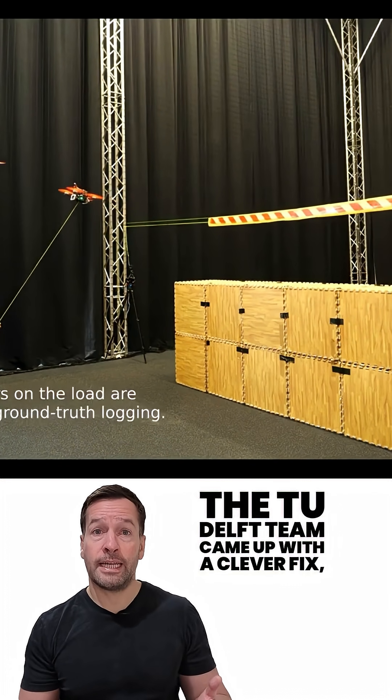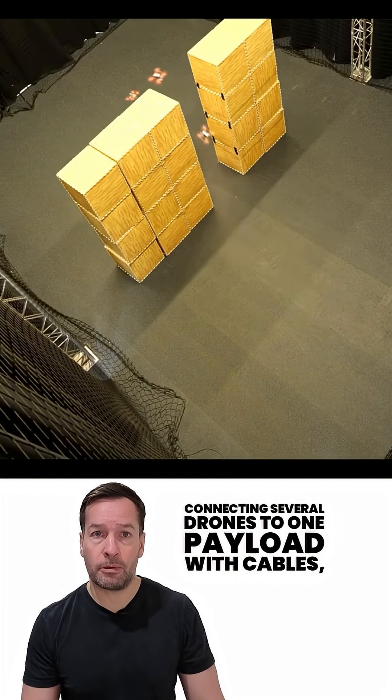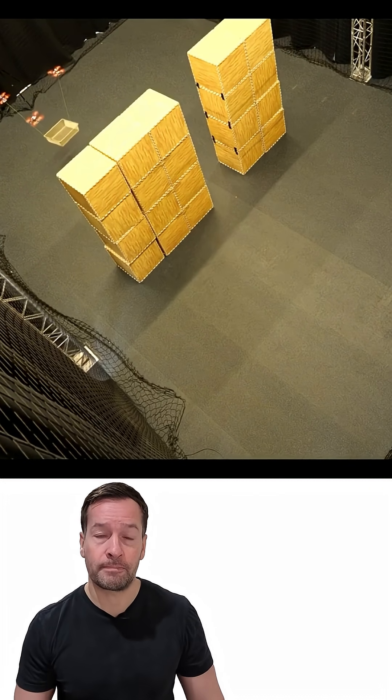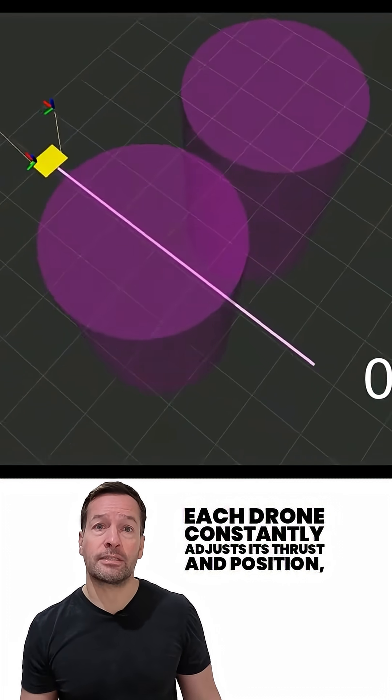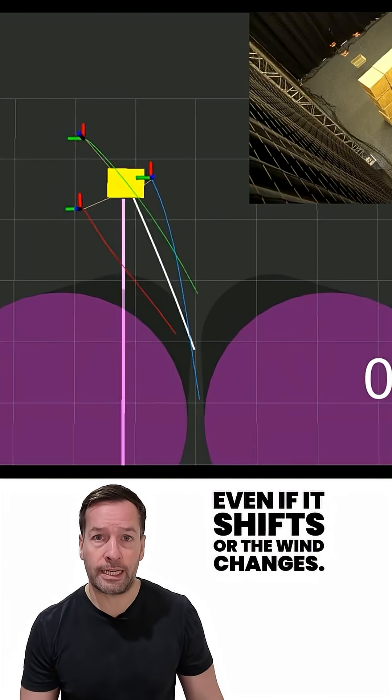The TU Delft team came up with a clever fix: connecting several drones to one payload with cables, then using an algorithm to coordinate the movements in real time. Each drone constantly adjusts its thrust and position, keeping the load balanced even if it shifts or the wind changes.